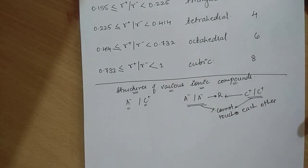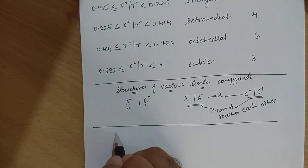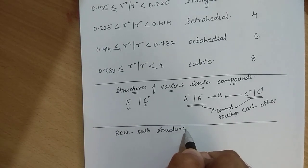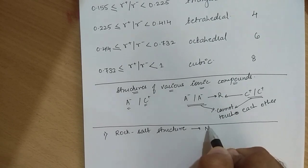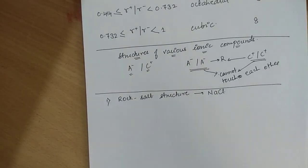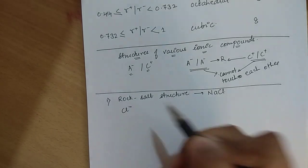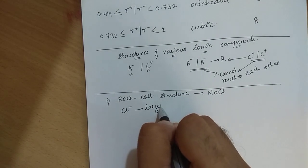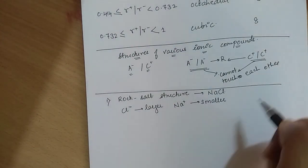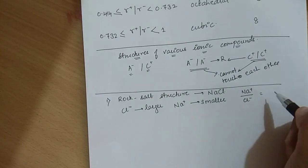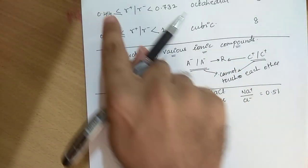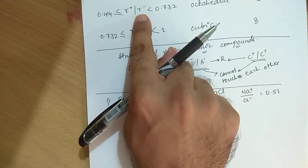The first structure we will look at is called the rock salt structure. This is basically the structure of NaCl — sodium chloride. In the NaCl structure, Cl⁻ ions are larger and Na⁺ ions are smaller. If you look at the radius ratio of Na⁺ to Cl⁻, this radius ratio is around 0.51. Since 0.51 lies between 0.414 and 0.732, the octahedral holes will be occupied.